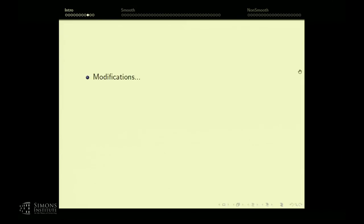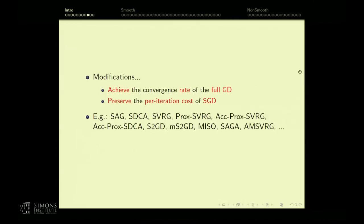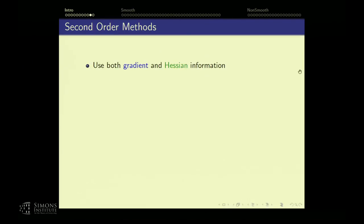People modify SGD-type algorithms to achieve the convergence rate of full gradient descent while preserving the per-iteration cost of SGD. You see a whole class of methods that do just that. Second order methods, however, are called second order not because they're inferior — they just use second-order information. In addition to the gradient, they also look at curvature or Hessian information.